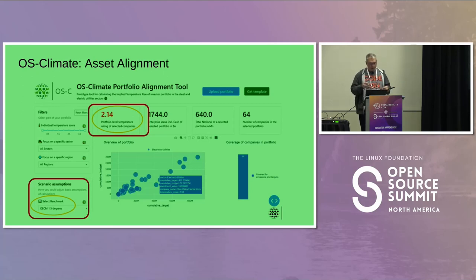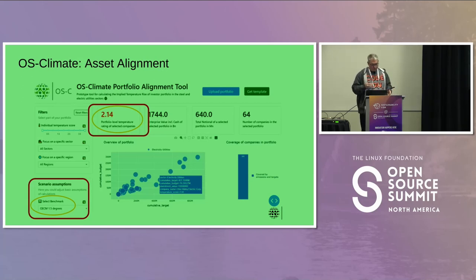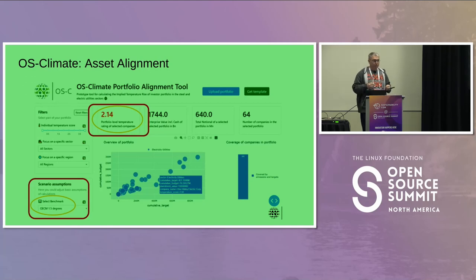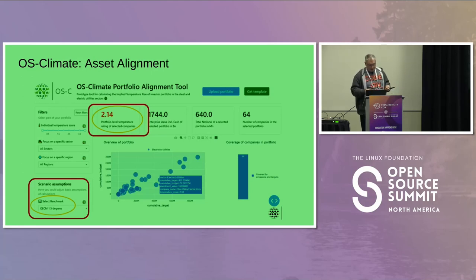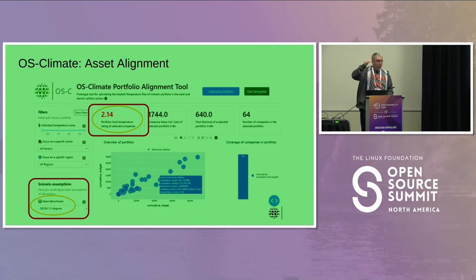If you look down in the lower left, you can see we're selecting a benchmark — the Paris Accords 1.5 degrees Celsius maximum temperature rise. So if we imagine that policy goal, how is this set of investments looking? You can see it's actually not meeting that goal. Using current measurements, whatever the list of investments in this portfolio is, it's actually on track for 2.14 degrees Celsius.